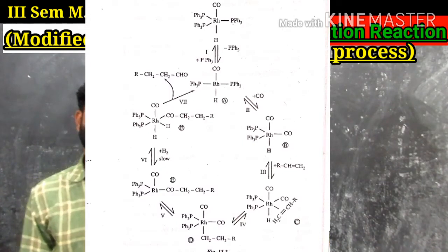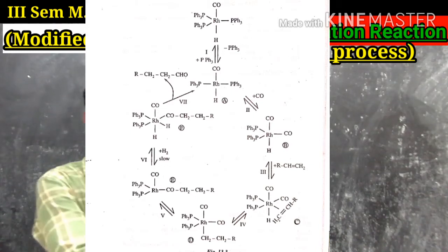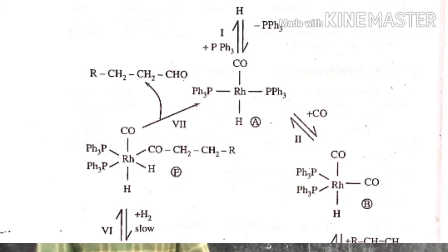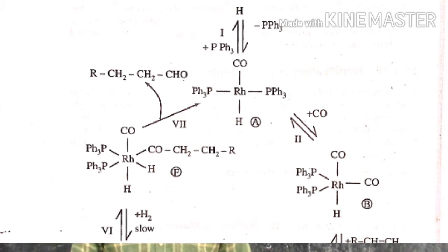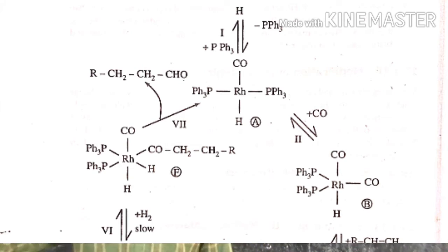The different steps involved in the rhodium catalytic cycle are represented as follows. Step 1 is the reversible loss of one molecule of PPh₃ to yield a four-coordinated species A, which is the active catalyst.